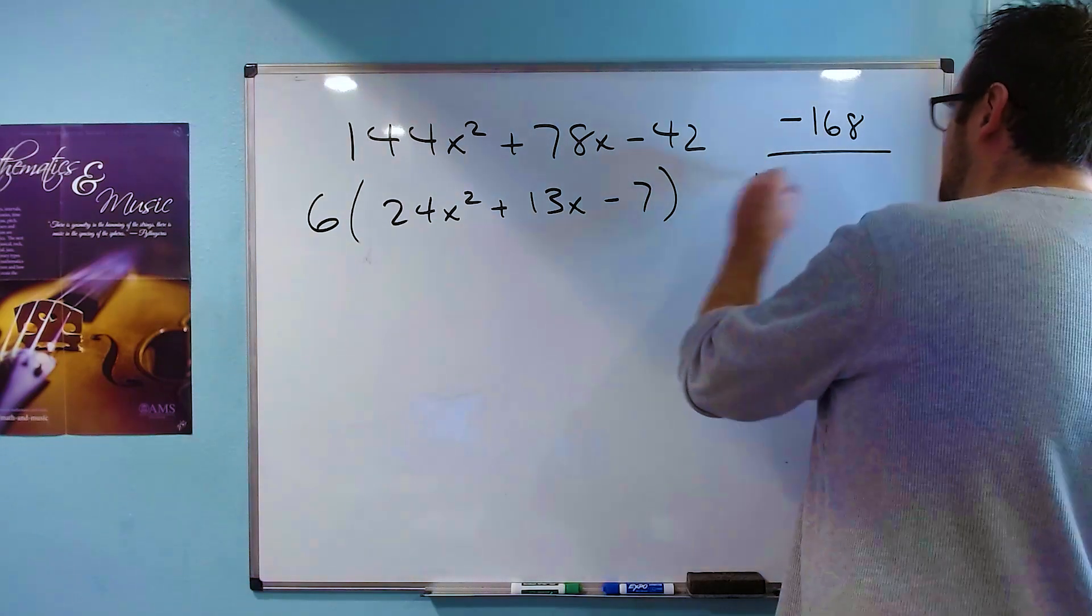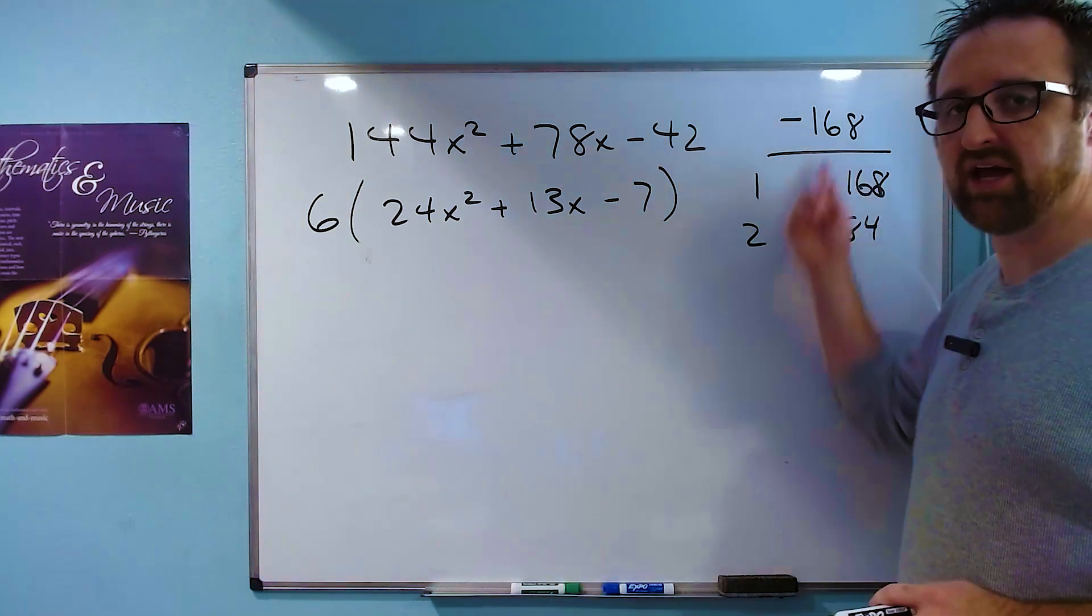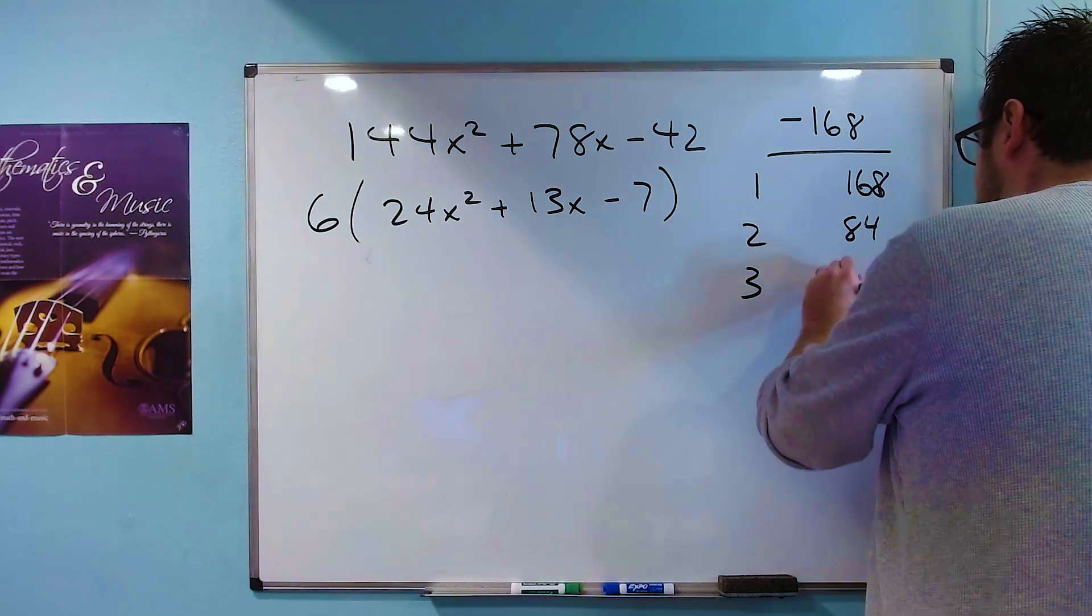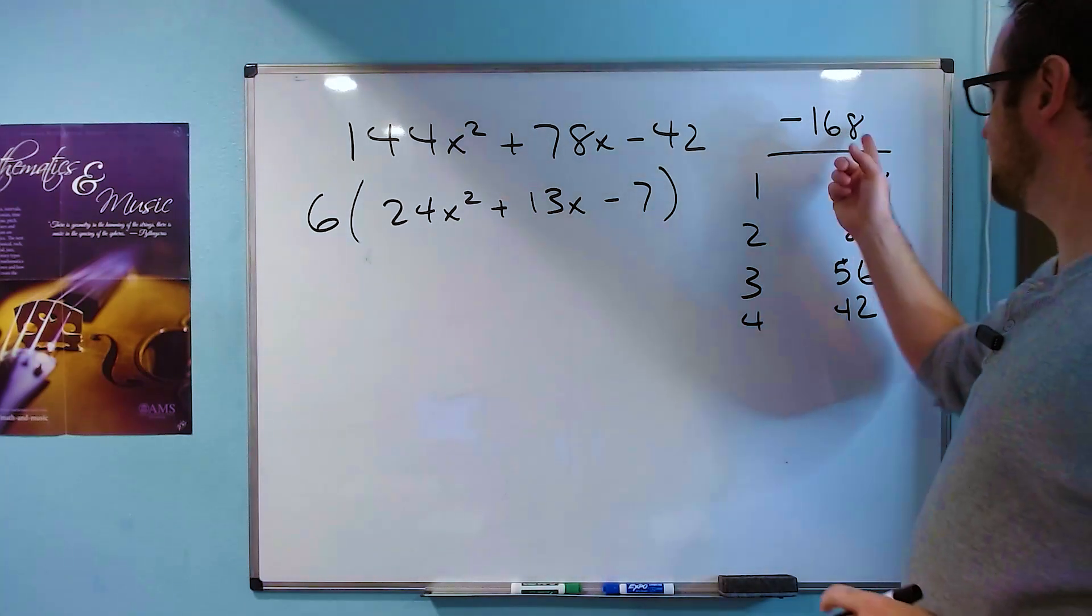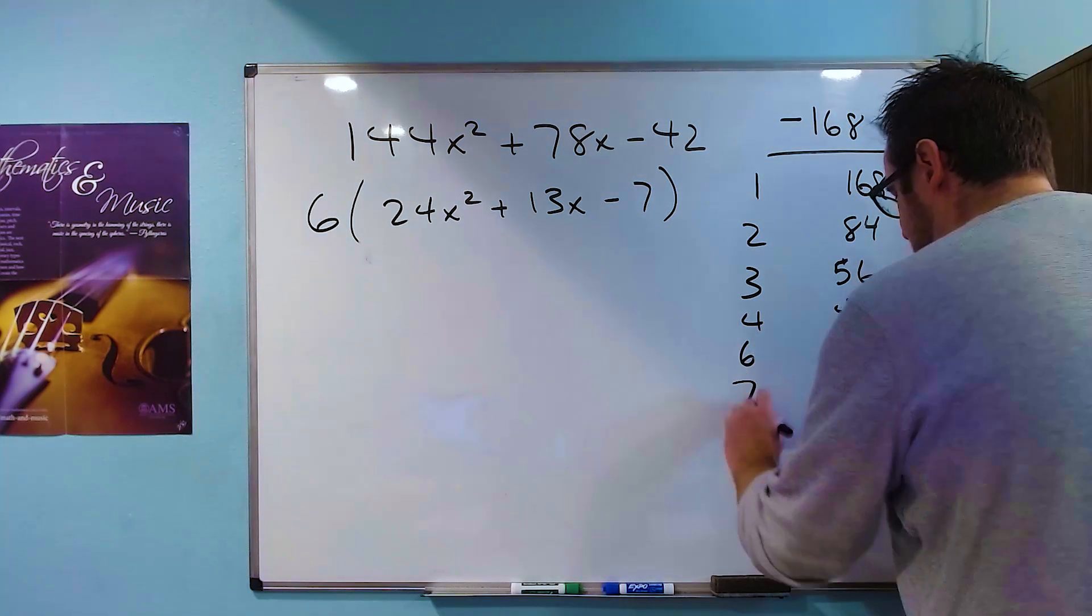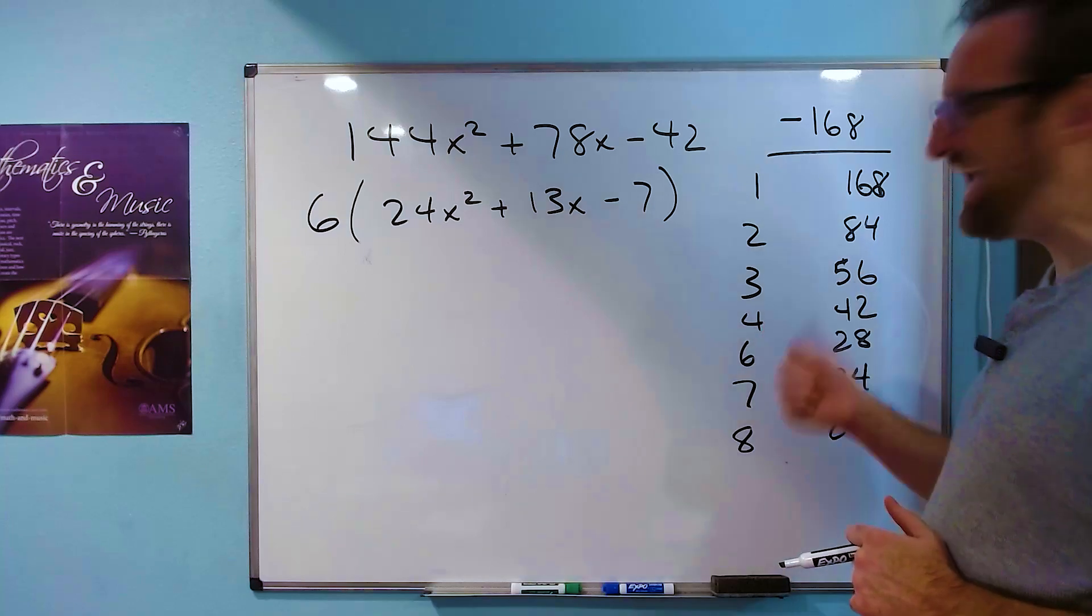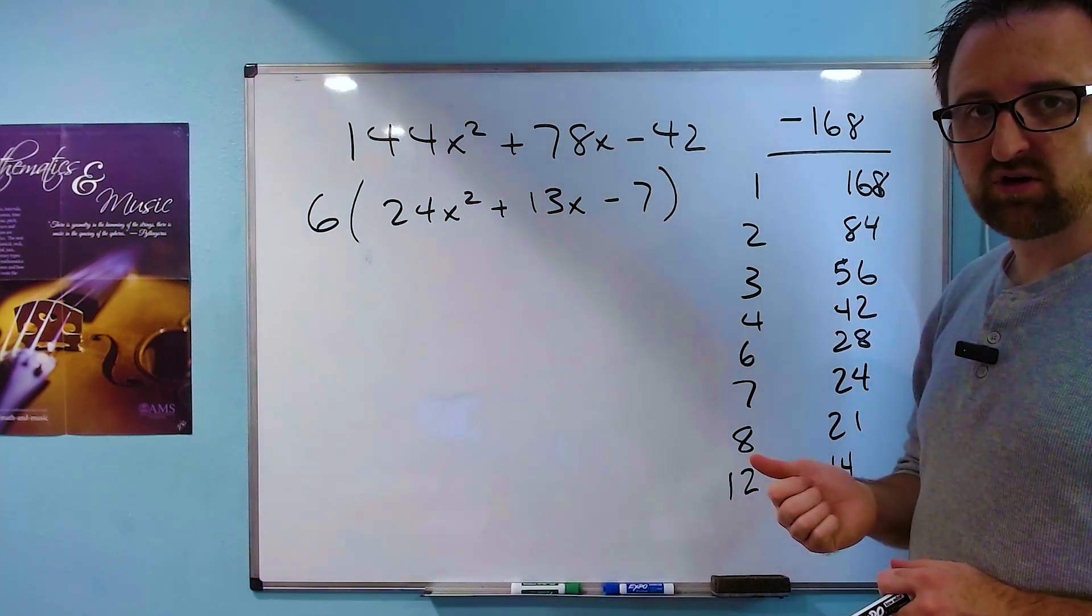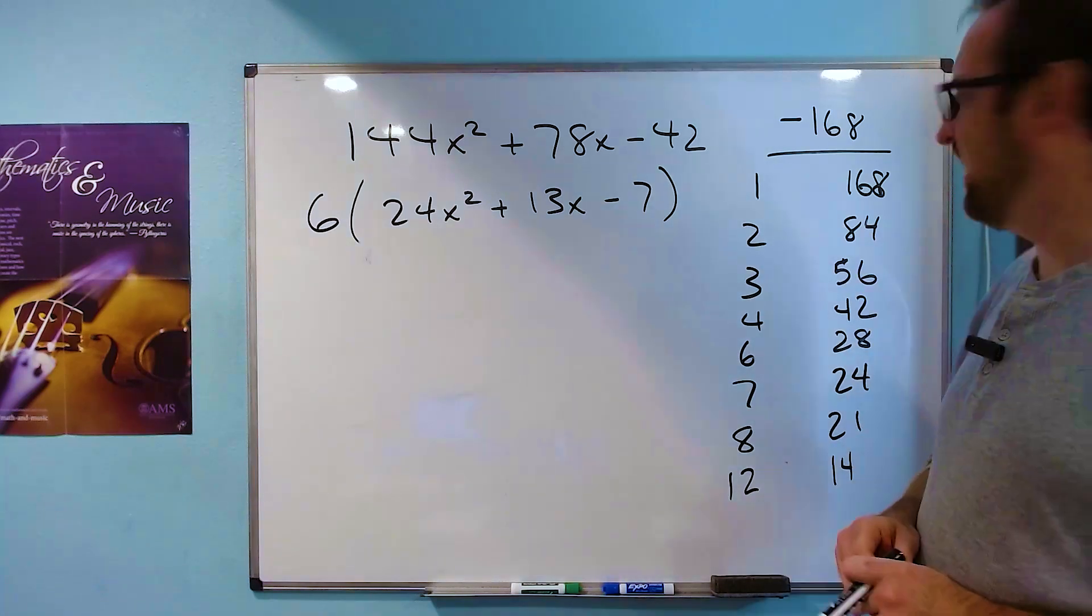So we start by counting 1 and 168. That works. 2 works with 84. And by the way, when you do this, it's okay to use a calculator to do these divisions. If you do 3, you get 56. 4 works with 42. 5 doesn't work because it doesn't end in 5 or 0. 6 works and you get 28. 7 works with 24. 8 works with 21. 9, 10, and 11 don't work. But 12 works with 14. 13 doesn't work, and 14 is already listed. So we have the complete list of possible pairs of factors of 168.